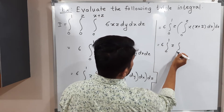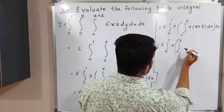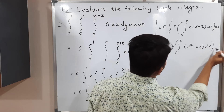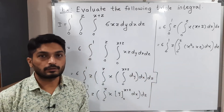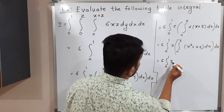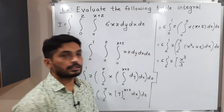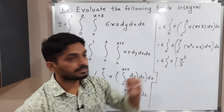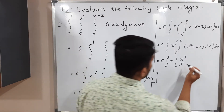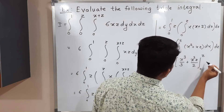So we have 6 integration 0 to 1, z times integration 0 to z of (x plus z) dx dz. Let us expand the bracket and then integrate: we get x squared plus xz, then dx dz. Integrating with respect to x: the integration of x squared is x cubed by 3, and z is a constant so the second term gives x squared z by 2. We write this with limit 0 to z, followed by z dz.